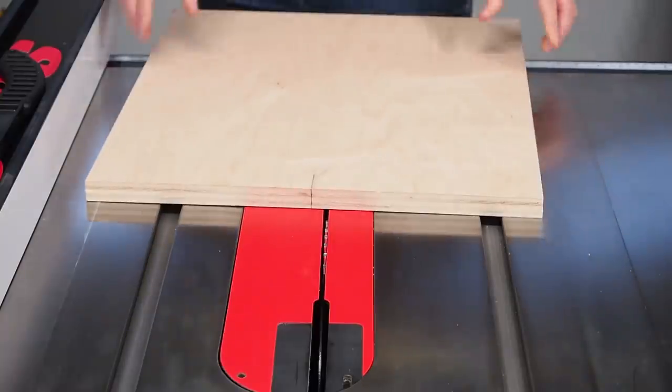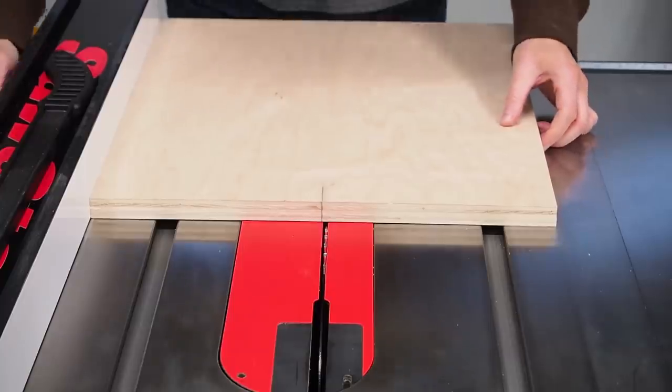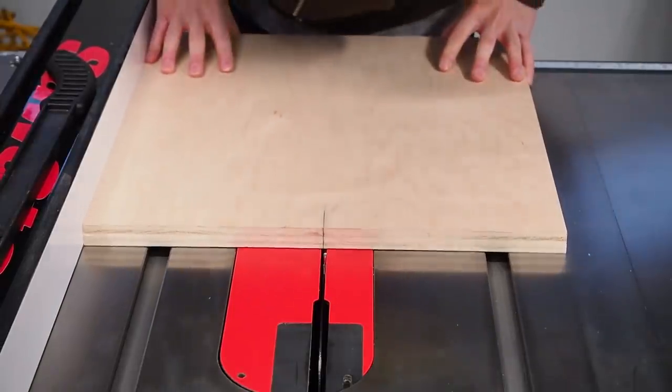Over at my table saw I positioned the fence so that the center marking lined up with the blade. I locked the fence down and removed the board so I could install the runners.